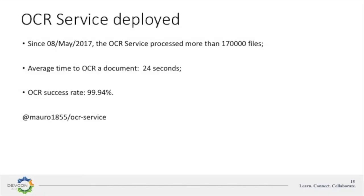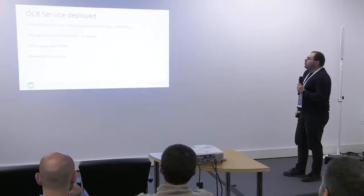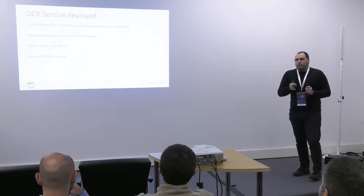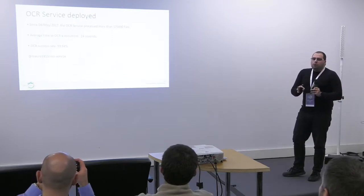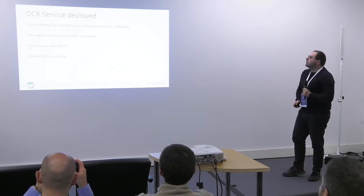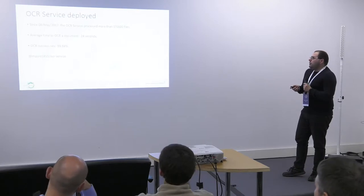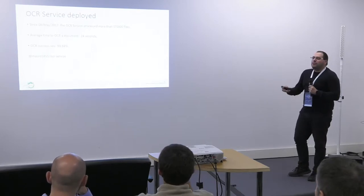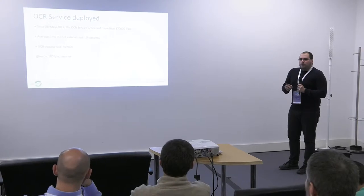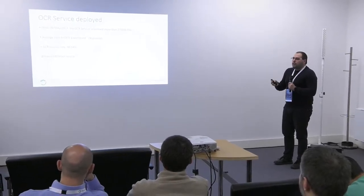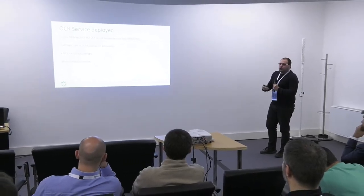The OCR service was deployed in May 2017 and so far has processed more than 117,000 files. From our database statistics, it took an average of 24 seconds to OCR each document — though each document may have multiple pages. On average, a one or two page document takes about six or seven seconds, so it's not bad. We have an OCR success rate of 99.94%, which is very good. The ones that don't get OCR'd are usually corrupted PDFs, or documents where OCR takes more than five minutes — we drop those to avoid blocking the queue.